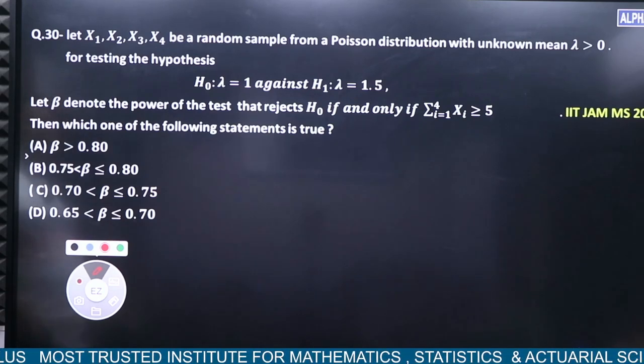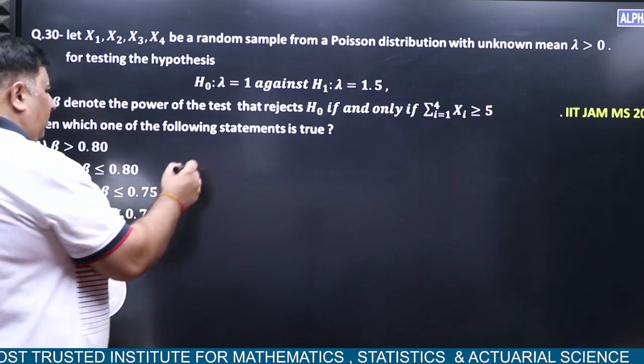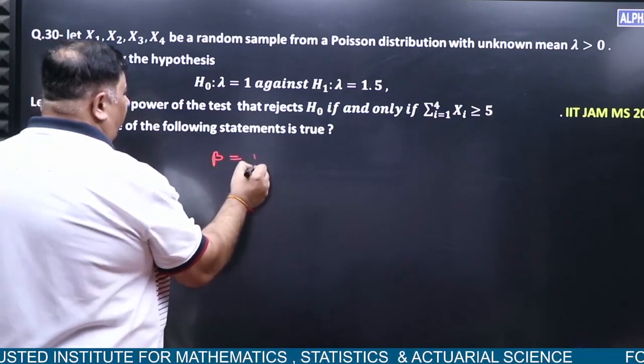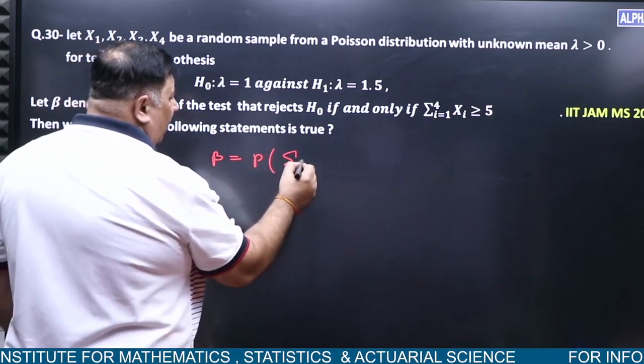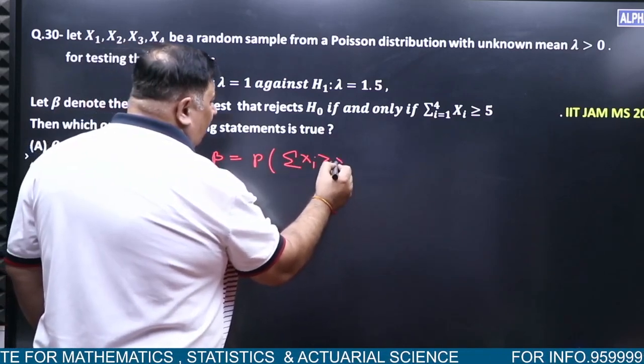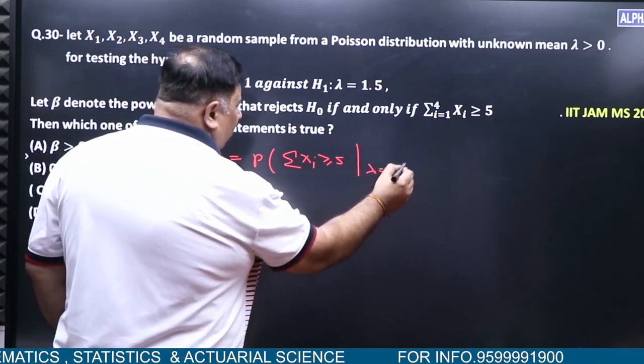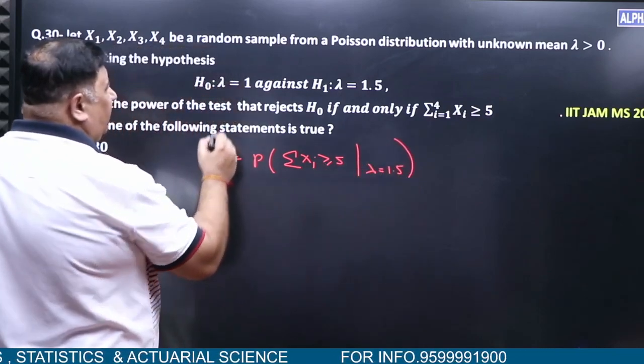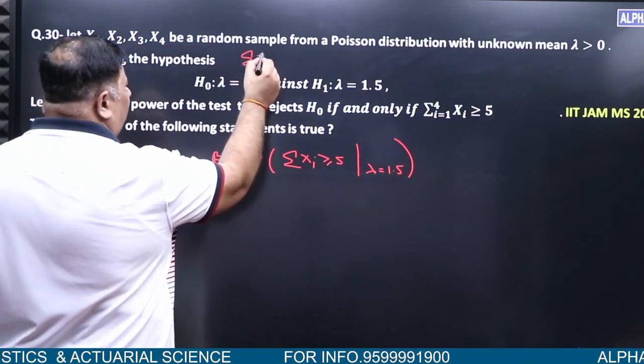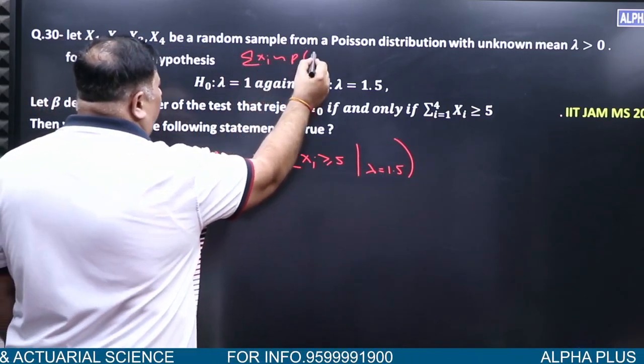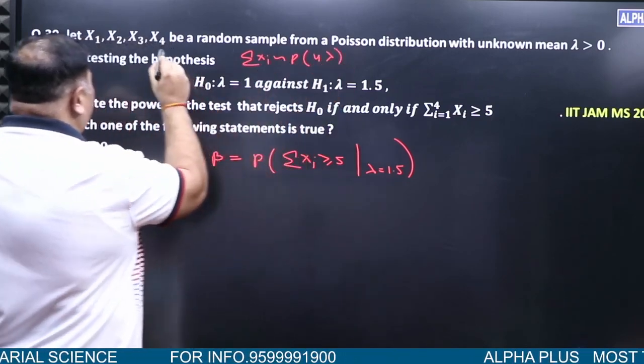We need to find beta values. What is the question asking? Power of test. So reject H naught when summation xi is greater than or equal to 5 when H1 is true. The distribution of summation xi, sum of Poisson is Poisson. Poisson 4 lambda. Beta equals 4 and sample size n equals 4.